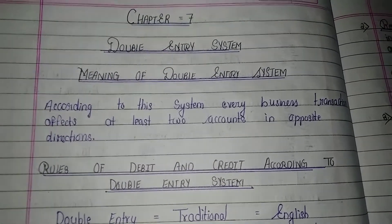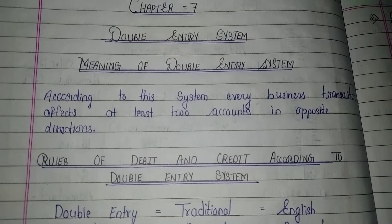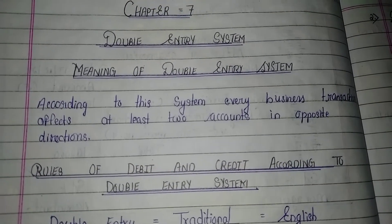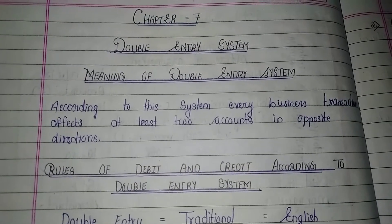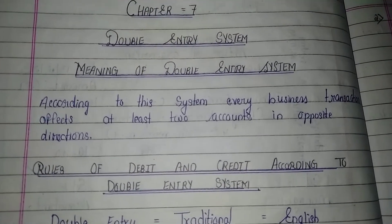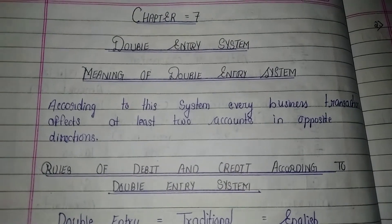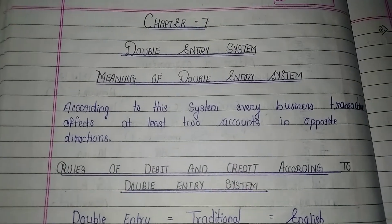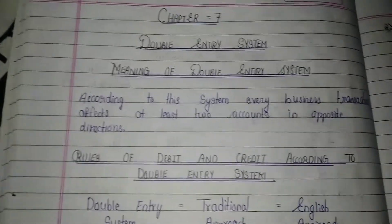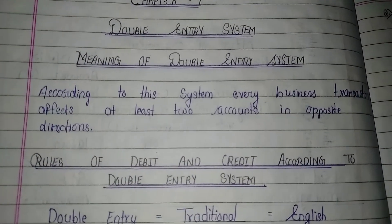For example, if we have bought furniture, it will affect two parts — one debit side and one credit side. Since assets increased, we write furniture account debit, and since cash is lost, we write cash account credit. This is the two-part effect, so we call it the double entry system.